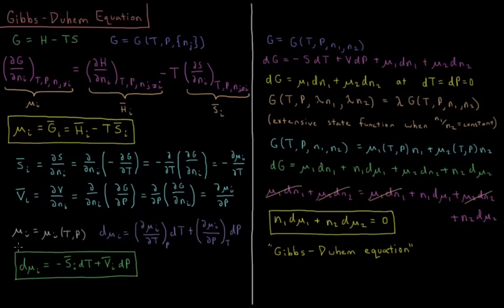Similarly, just as the Gibbs energy is a function of temperature and pressure, the chemical potential is also a function of temperature and pressure. So dμ_i, the change in the chemical potential of a substance when temperature and pressure are allowed to vary, is the partial derivative of chemical potential with respect to temperature times dT, plus the partial derivative of chemical potential with respect to pressure times dP. Therefore, dμ_i equals −S̄_i dT plus V̄_i dP — the negative partial molar entropy times dT plus the partial molar volume times dP.